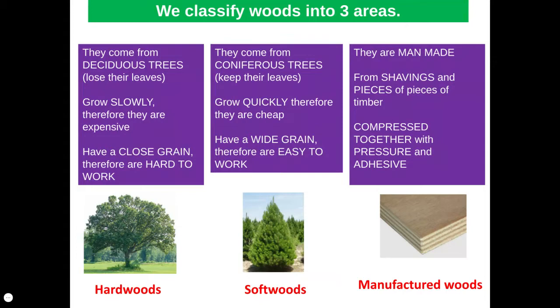The third classification of wood that we need to think about are man-made woods. Man-made woods can be made in a variety of ways. The image I have on the slide is of plywood, which is layers of timber glued together with their grain at 90 degrees from each other. Things like MDF or chipboard are made from shavings and pieces of timber, put together with glue and resin, and then compressed together with pressure and heat to form into boards.